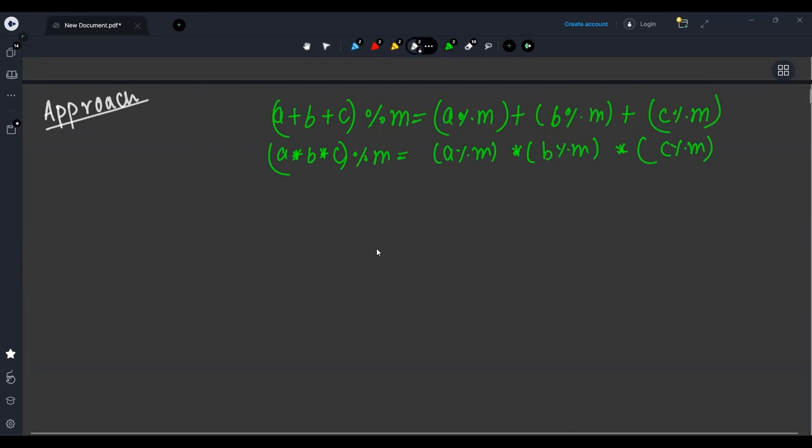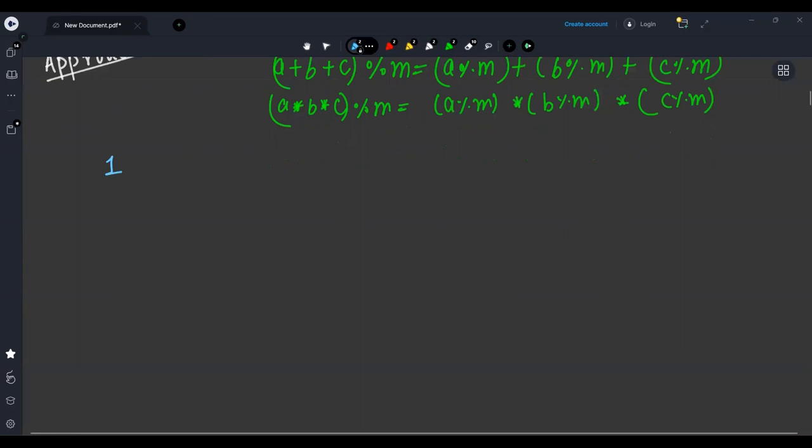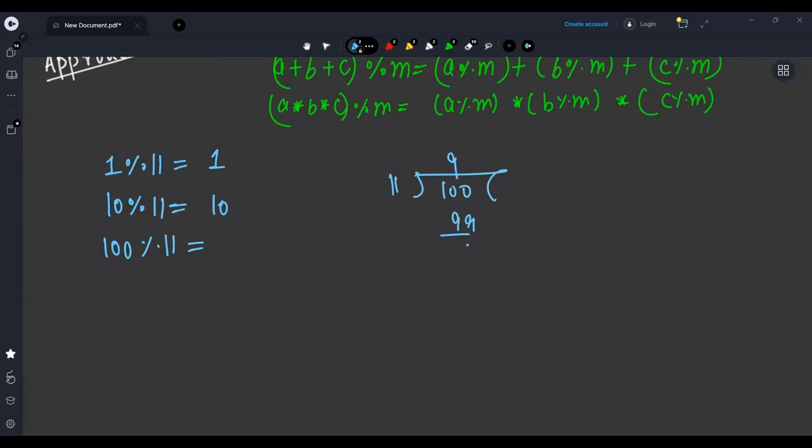Now there is some observation that you have to understand. If I take 1 and modulo it by 11, it will give 1. If I do 10 modulo 11, it will give 10. If I do 100 modulo 11, 11 into 9 is 99, so remainder 1. If I do 1000 modulo 11, it will give 10.